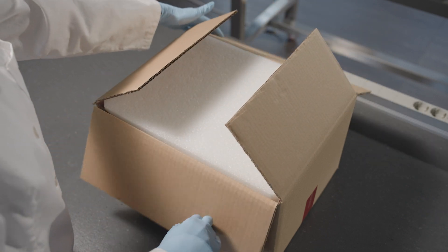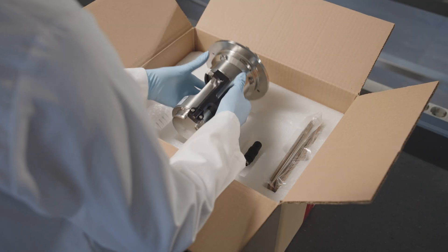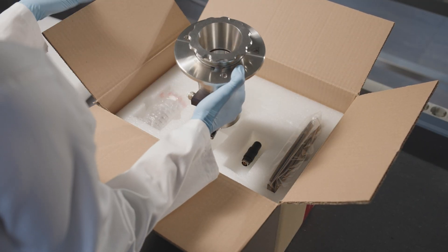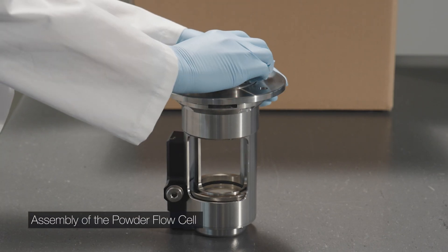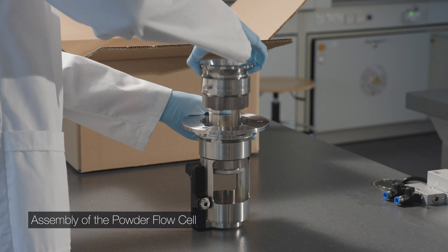First, unbox the envelope density setup. Unlock the powder flow cell from the cell holder by turning it counterclockwise.